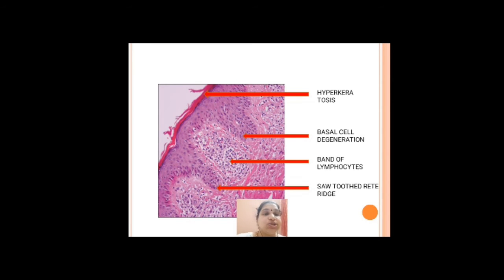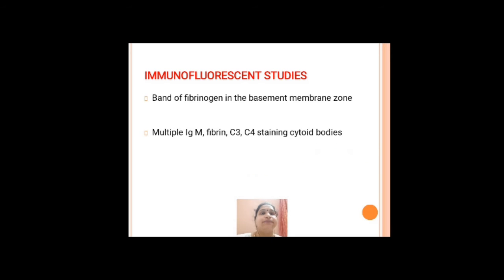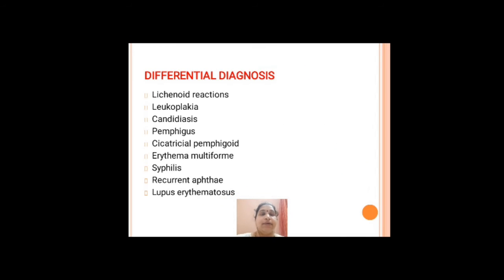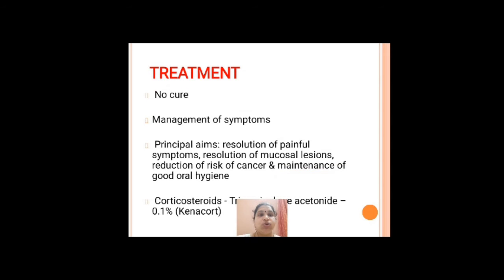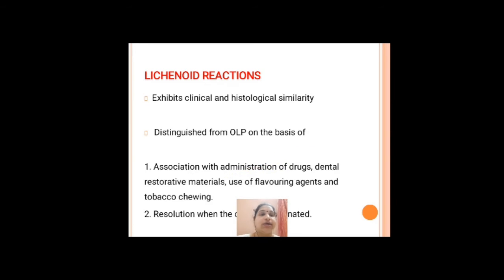To summarize the histopathology of lichen planus: liquefaction degeneration of basal cells, civatte bodies, sub-epithelial lymphocytic infiltrate, Max-Joseph spaces, and saw-tooth rete ridges. Malignant transformation is usually very low. It is commonly treated with topical steroids like triamcinolone acetonide 0.1 percent, commercially available as Kenacort.